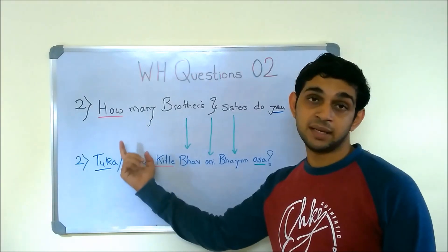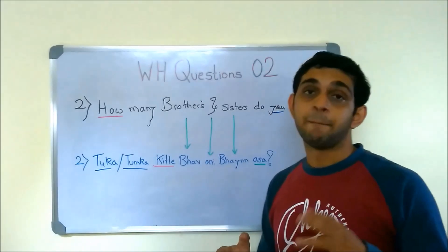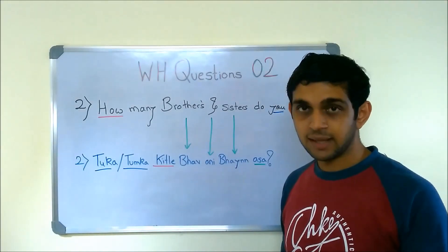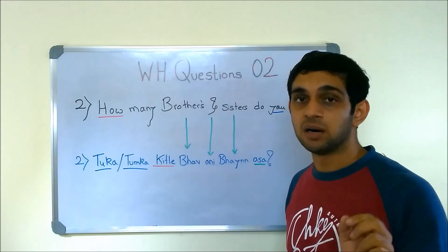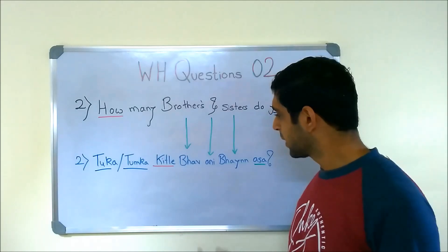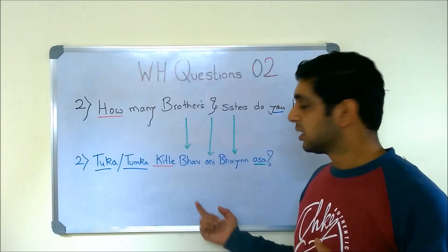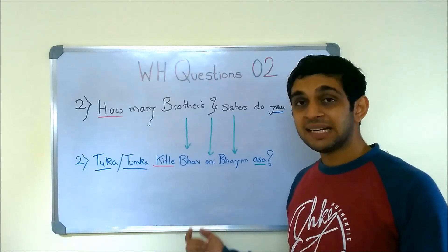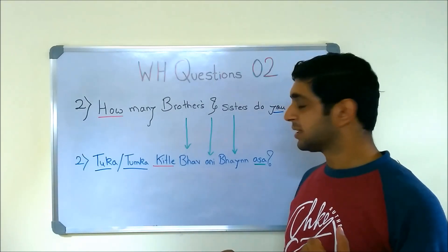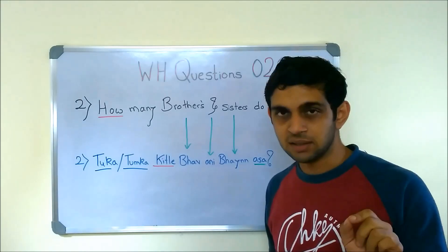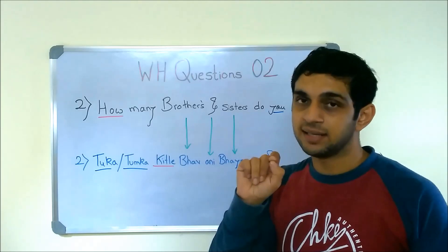KITLE is 'how many'. BHAAV is 'brothers' — it has to be heavy and a bit harsh: BHAAV. ANI means 'and' — this is not AANI that looks like NI; it is actually pronounced with the tongue pulled back. It is NO basically, but when you say it, the tip of your tongue is just behind your front teeth.